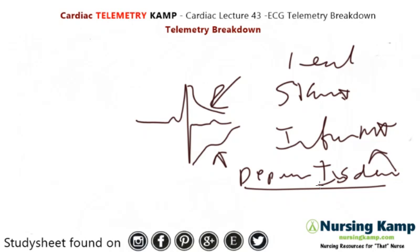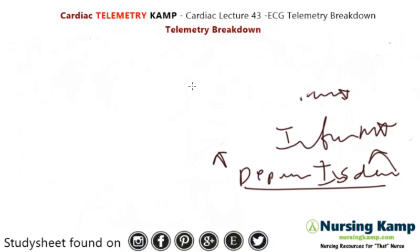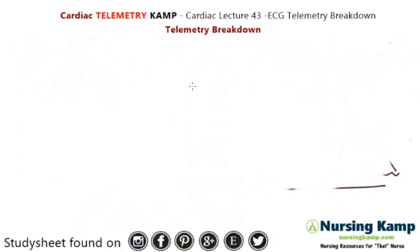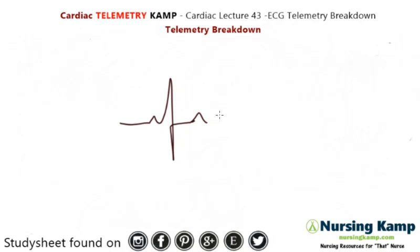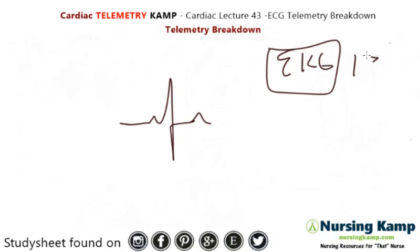So we're going to talk about getting an EKG. If a patient is having chest pain, or the patient is on a monitor and you see ST depressions or ST elevations, you get an EKG — and that's a 12-lead.